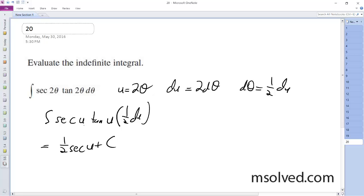Because the derivative of secant is secant tangent, the integral is going to be secant u. So 1/2 secant u plus c.